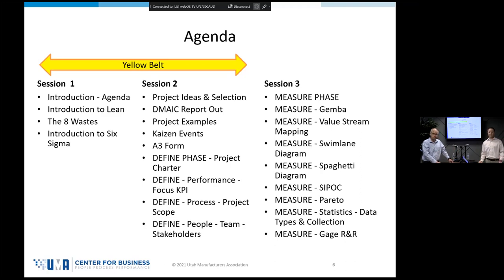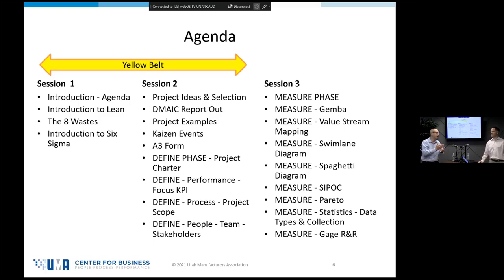Workplace organization is what we're talking about with 5S. Another great project could be mistake proofing — going out with your team and finding a quality defect on a constant basis and finding a way to eliminate it. Another one could be finding variability in your process, like if you're trying to fill a bag with a specific weight and it keeps going off, causing problems downstream. The key is understanding what the problem is instead of jumping to the solution — we want to define it, measure it, and analyze it before getting into solutions.